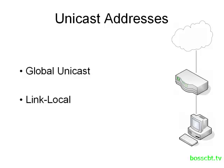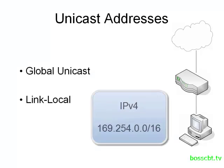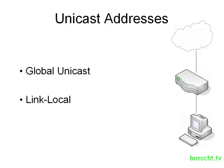In version 4, the equivalent would be the 169.254/16 network — the link local equivalent in IP version 4. You've probably seen a computer use that address when it doesn't have any connectivity; it will self-assign that IP address. It's a very similar concept to the link local in IP version 6.